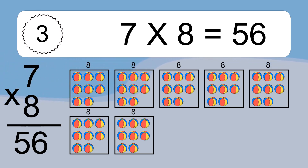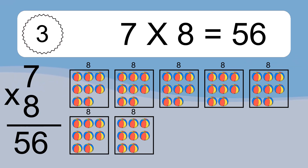We have 7 boxes, and each box has 8 colorful balls inside. If you count all the balls in all the boxes together, you will have 7 times 8 balls. This equals 56 balls.